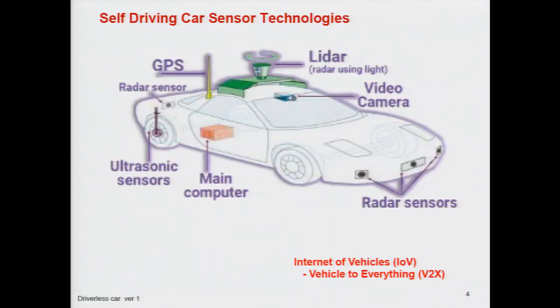The radar sensors are primarily used to get an image of objects in front of the vehicle so that we can avoid accidents. The video camera gives a view around the car of objects both living and inanimate, and that data is collected. Lidar uses multiple laser beams with rotating mirrors which gives an image view around the car.